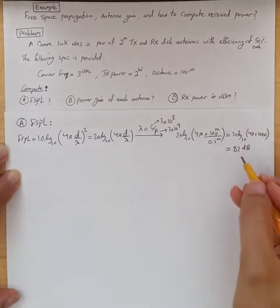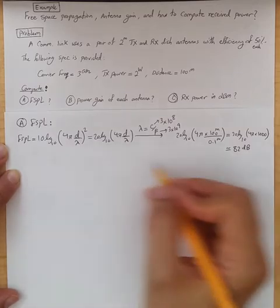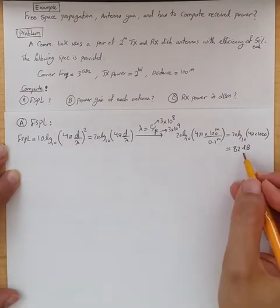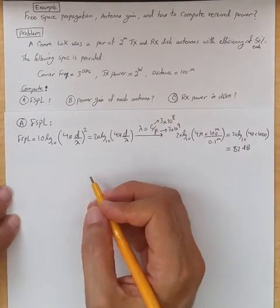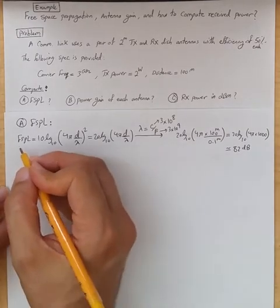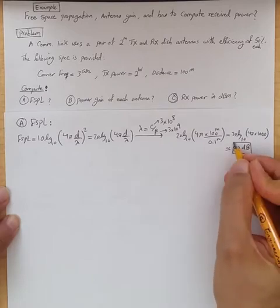And by the way, this free space path loss is only valid for far field, which is the case here for 100 meter distance between transmit and receive antenna. So we now have the free space path loss of 82 dB.